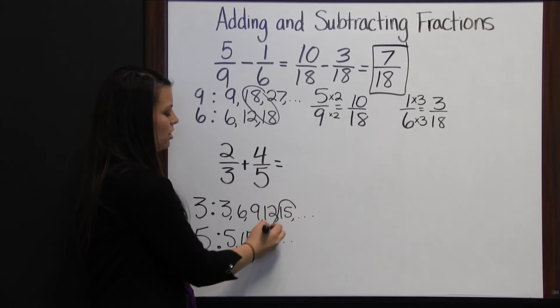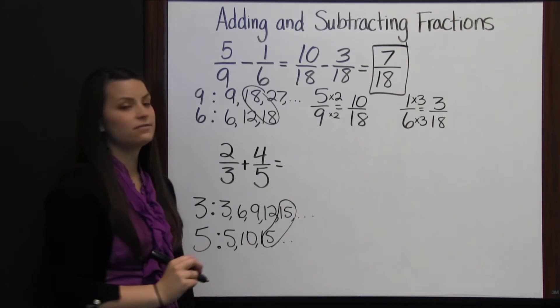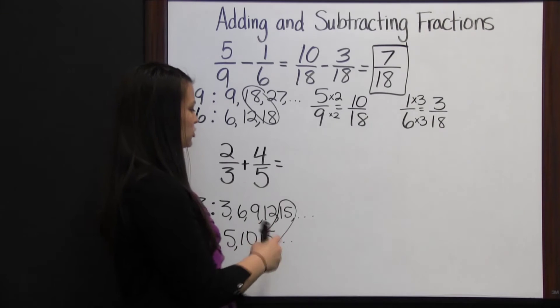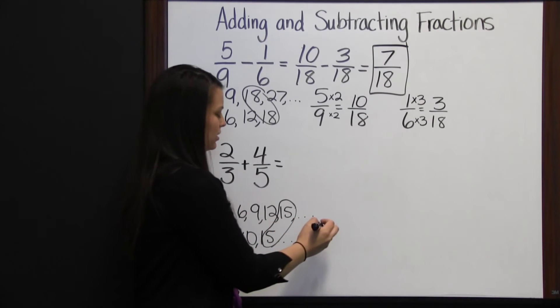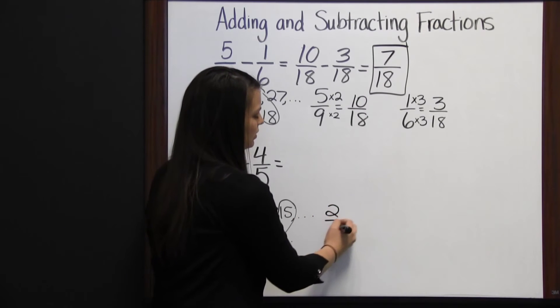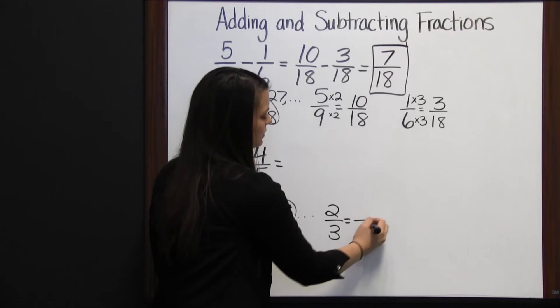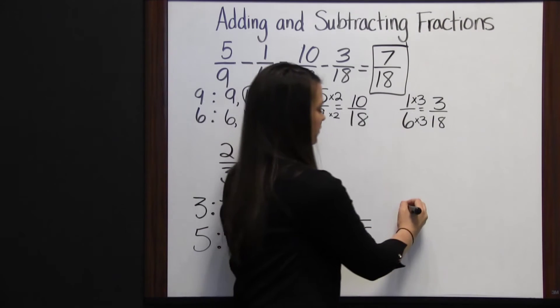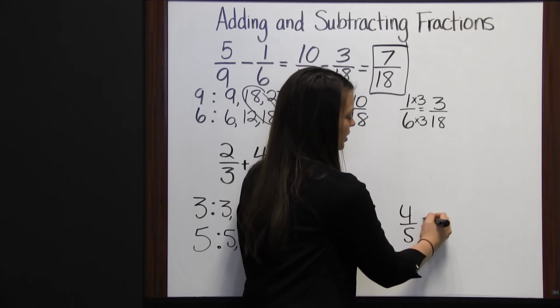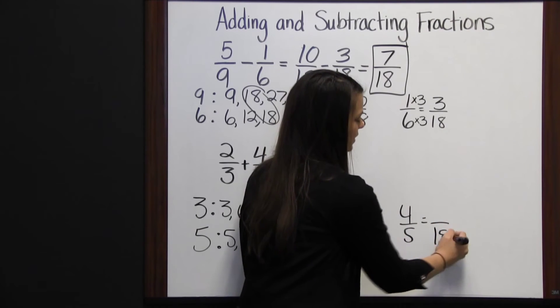So my least common multiple is fifteen, which means I'm going to change both my denominators to something over fifteen. Two-thirds equals something over fifteen, and four-fifths equals something over fifteen.